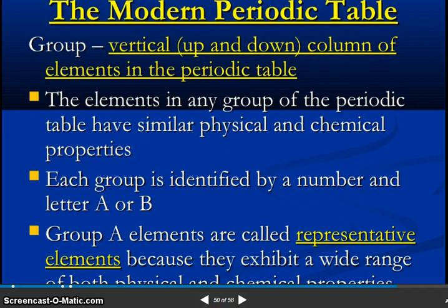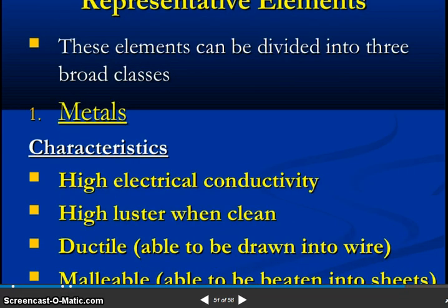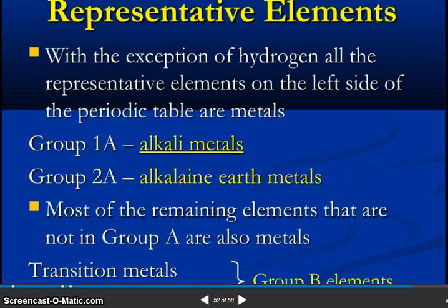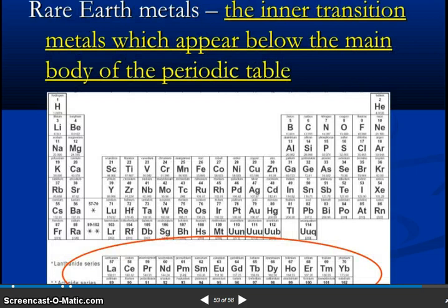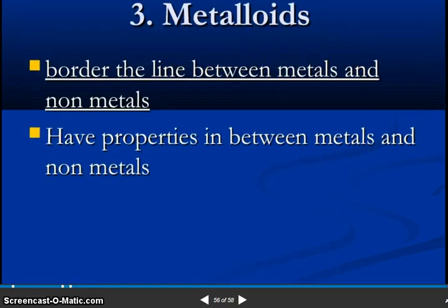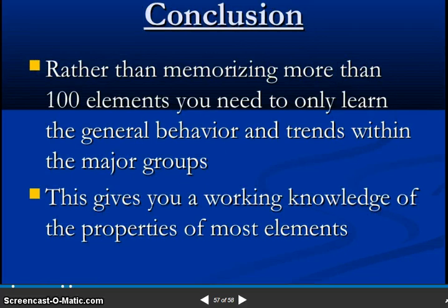So modern periodic table. Groups are vertical up and down columns of elements in the periodic table. The elements in any group of the periodic table have similar physical and chemical properties. Each group is identified by a number and letter A and B. Group A elements are called representative elements. And these elements can be divided into three broad classes: metals, non-metals, and metalloids. So rather than memorizing more than a hundred elements, you need to only learn the general behavior and trends within the major groups.